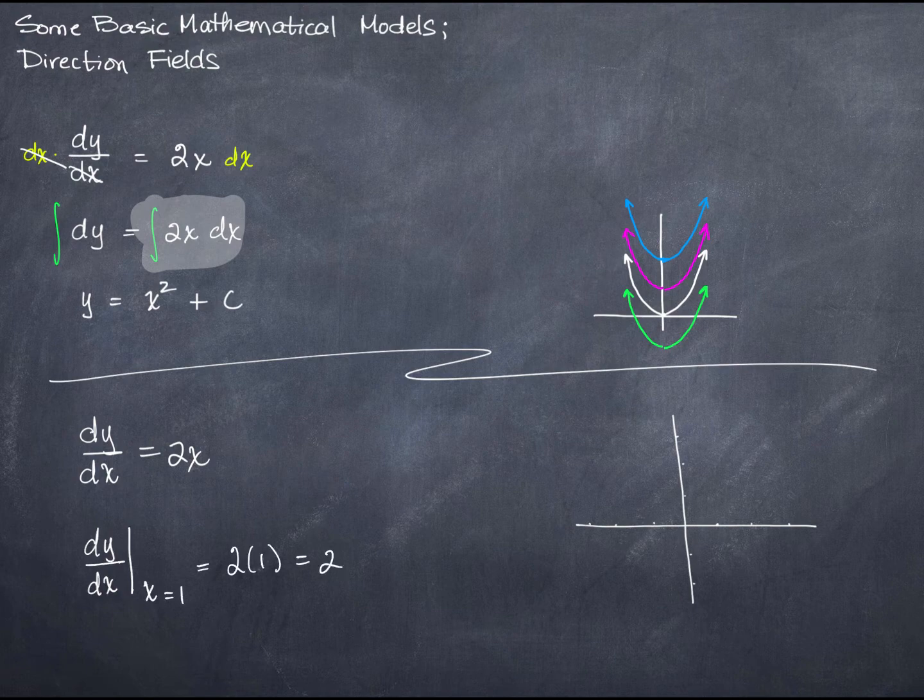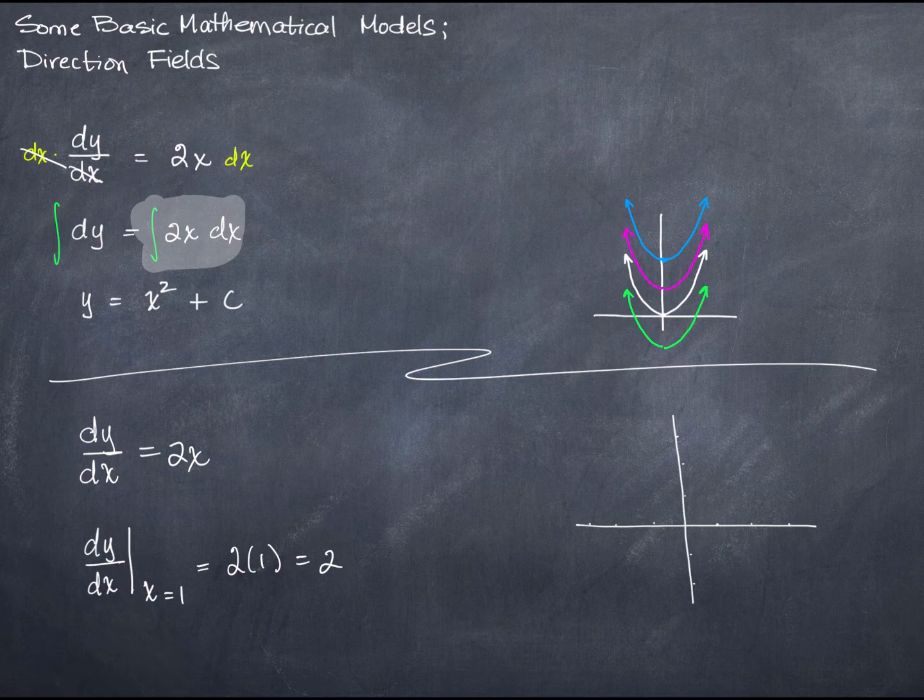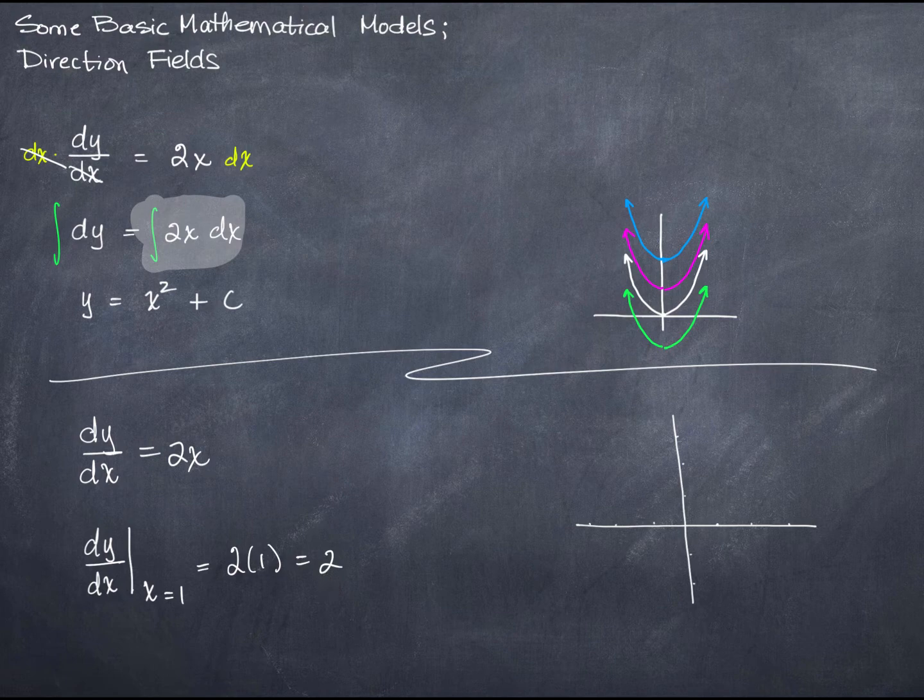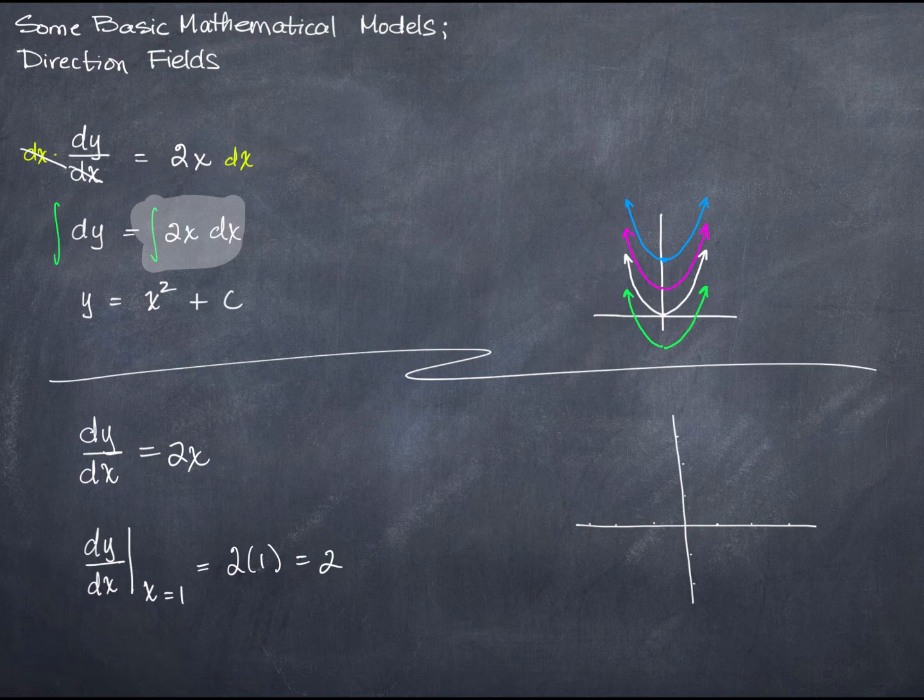I'm going to evaluate this at x equals 1. That's going to give me 2. What that means is that when x equals 1, the slope of my function is 2. No matter what y is, it doesn't matter what y is, the slope of my function is 2 any time the value of x is 1. It doesn't matter what y is. When x is 1, the slope of my function is 2.